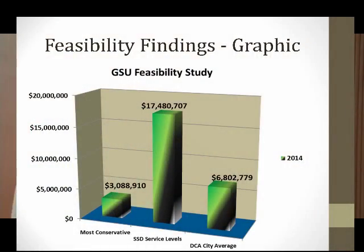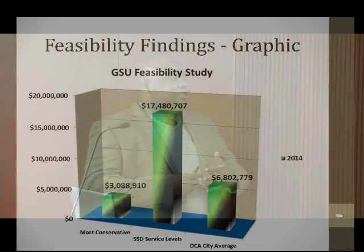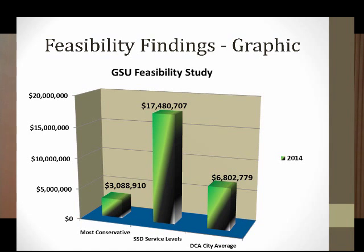Georgia State said not only can you form a city, you can increase parks and roads and be $3 million to the good. Under the second formula, keeping services the same, you'd have a surplus of $17 million. Under the third, at the state average, the surplus would be $6.8 million. For perspective, Brookhaven formed in 2012 or 2013 with a projected surplus of just $2 million. Our worst case is $3 million, best case $17 million, middle case $6.8 million. We're financially feasible in all three categories.